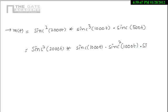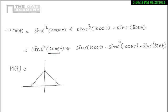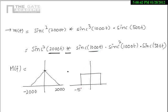We write it as sinc squared 2000t convolved with sinc 1000t multiplied by sinc squared 1000t, and then sinc 500t. Transforming into the frequency domain: sinc squared 2000t has Fourier transform as a triangle — 2000 represents half the width, so it spans from minus 2000 to 2000. This convolution in time domain becomes multiplication in the frequency domain. The Fourier transform of sinc 1000t is a rectangle with width 1000, spanning from minus 500 to 500.